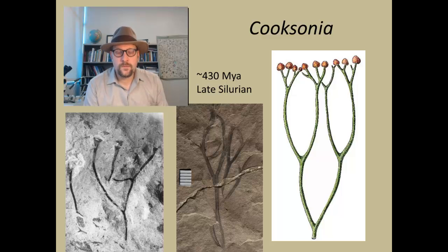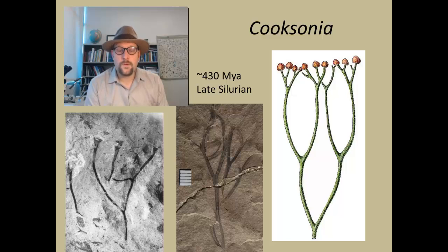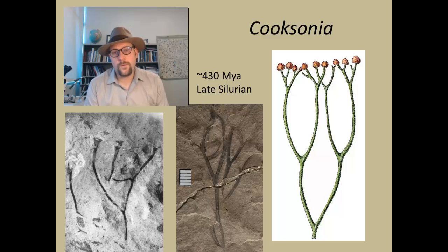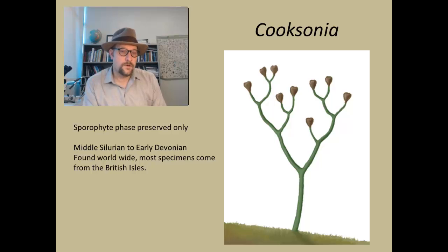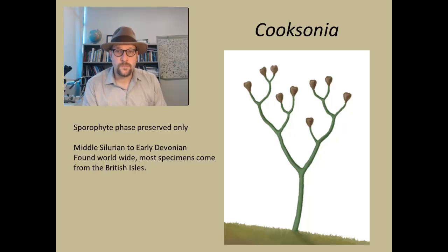One of the really interesting things about Cooksonia is that it has multiple stalks, multiple spore-bearing fruits on the ends of these sporophytes, which is very different from what we saw in the liverworts and hornworts, where we see a single stalk coming up and producing the spores. In Cooksonia there are multiple ones, which is probably a fairly advanced feature. The sporophyte phase is the only phase preserved; they are known from the middle Silurian to early Devonian, and they are found worldwide, though most studied specimens come from the British Isles.